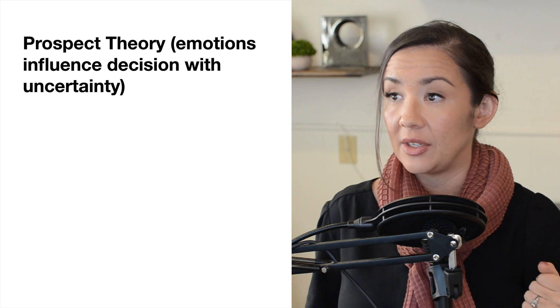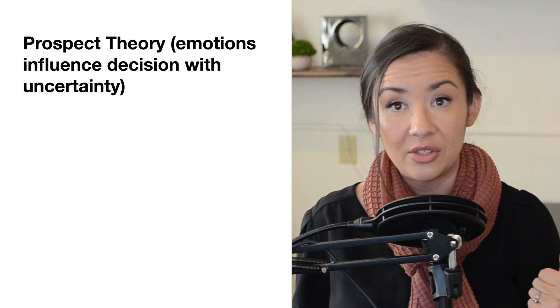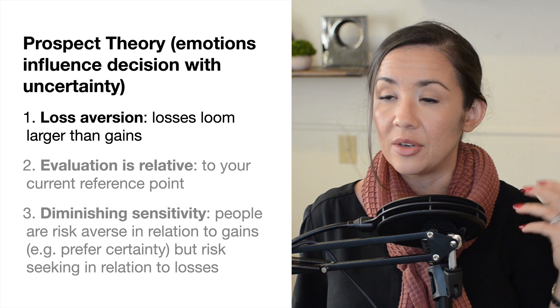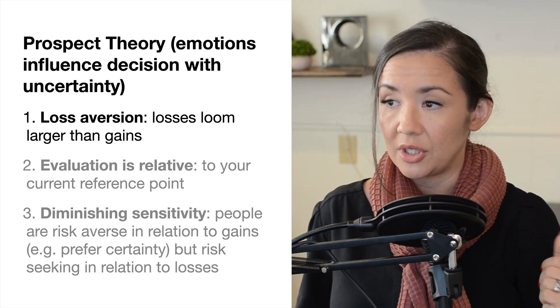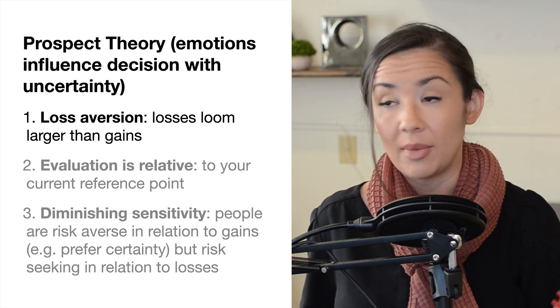Prospect theory involves emotion influencing our decisions with uncertainty. There's three components that I'll talk about today. First is loss aversion - this is where losses loom larger than gains in our mind.